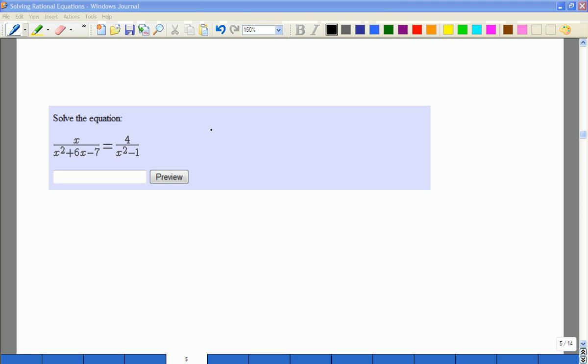These factors in this equation: I'm going to have x squared plus 6x minus 7. I could factor that as x plus 7 times x minus 1.